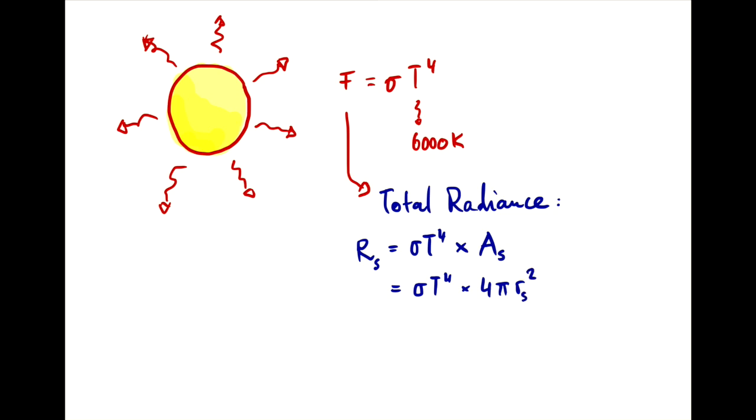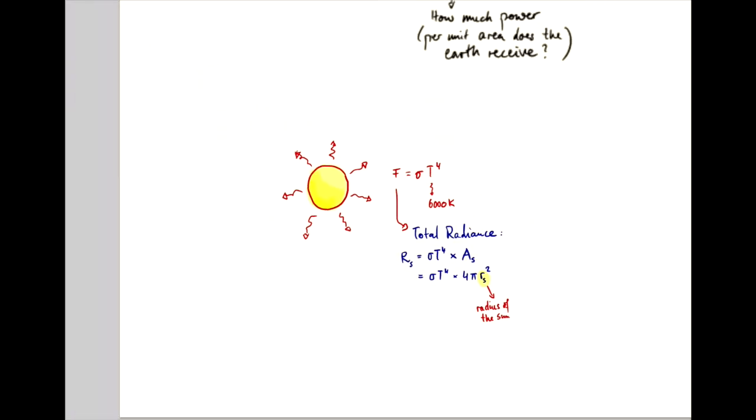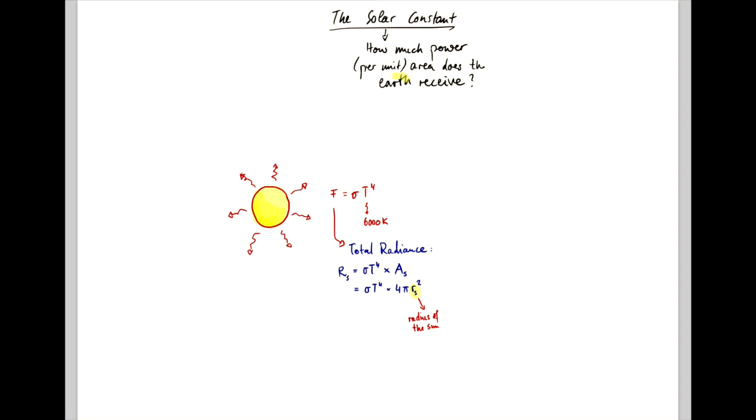where this r_s here is the radius of the Sun. Now, the question is, how much energy does Earth receive? And as the energy from the Sun radiates outward, its intensity per unit area becomes less.